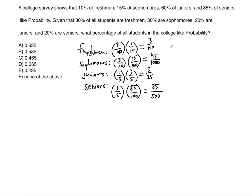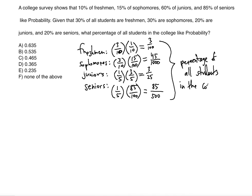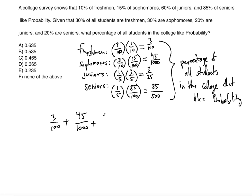Now notice that each of these represents the percentage of all students in the college that like probability. We have to sum them all up: 3 over 100 plus 45 over 1000 plus 3 over 25 plus 85 over 500.